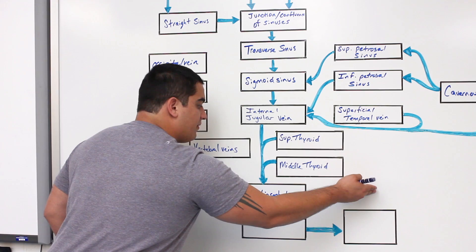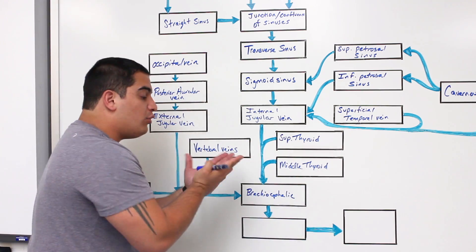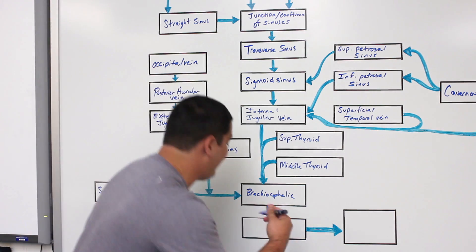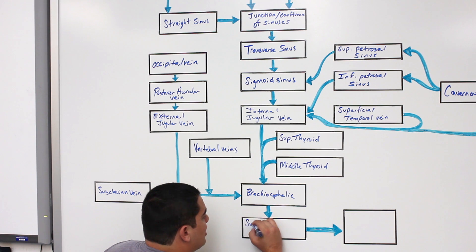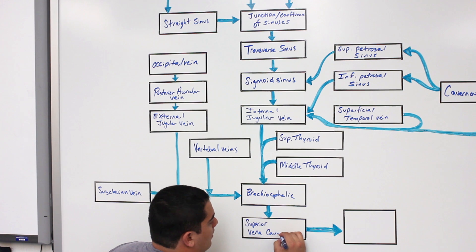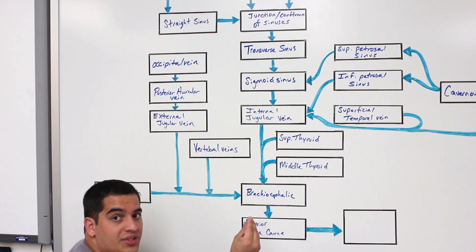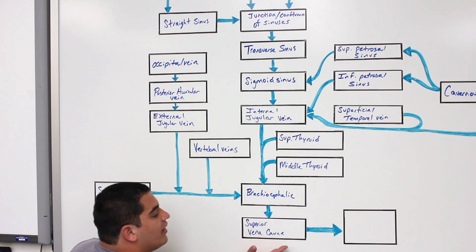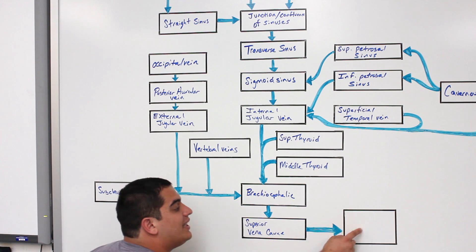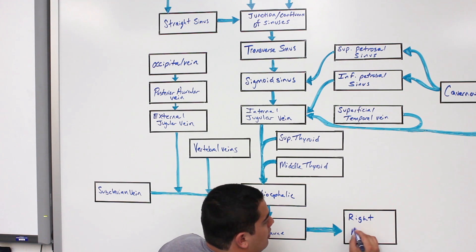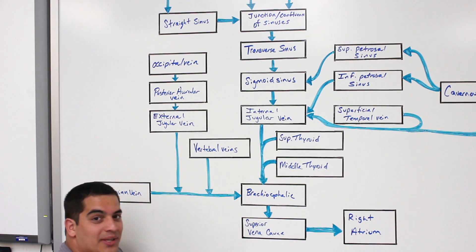The left and right brachiocephalic veins fuse together to form the superior vena cava. The superior vena cava then empties that blood into the right atrium, completing the systemic circuit.